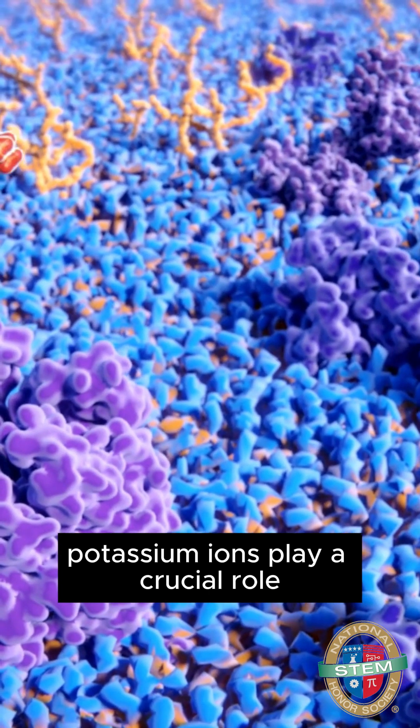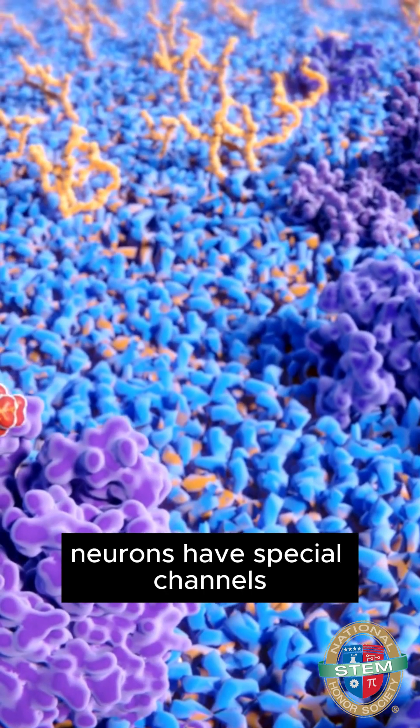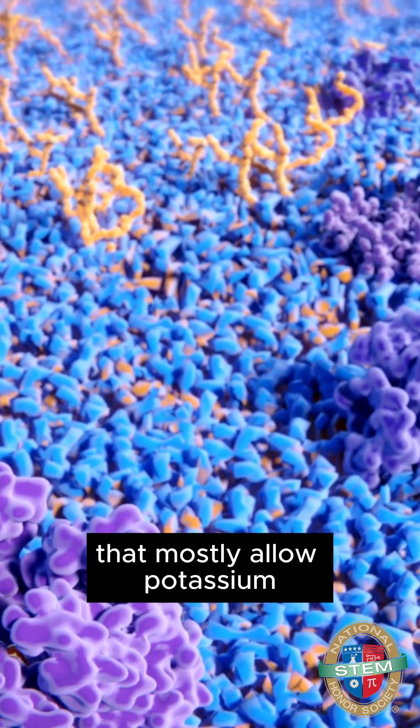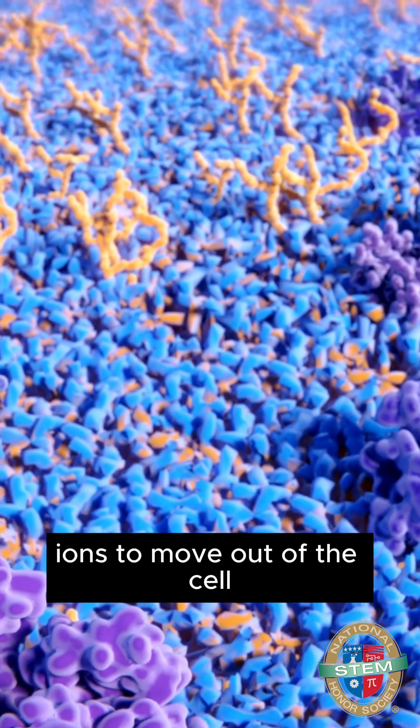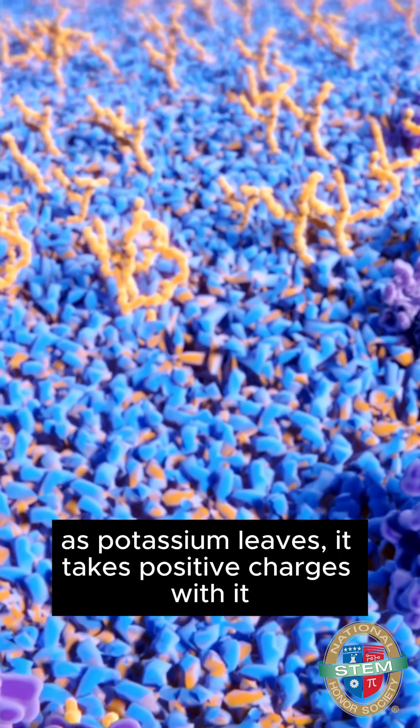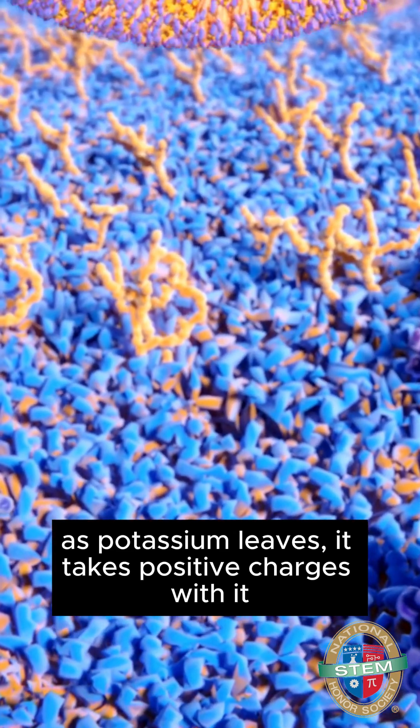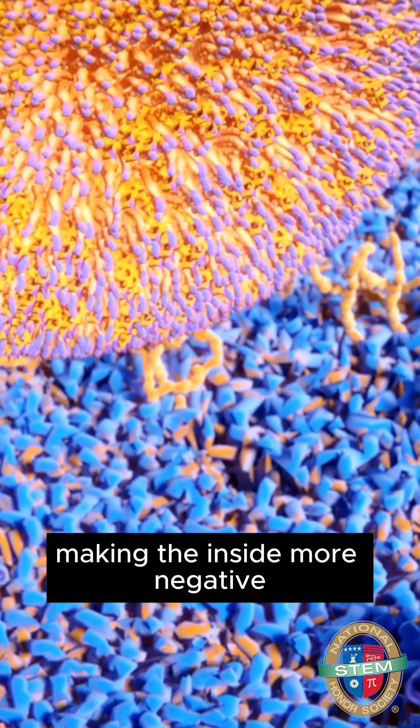Potassium ions play a crucial role. Neurons have special channels that mostly allow potassium ions to move out of the cell. As potassium leaves, it takes positive charges with it, making the inside more negative.